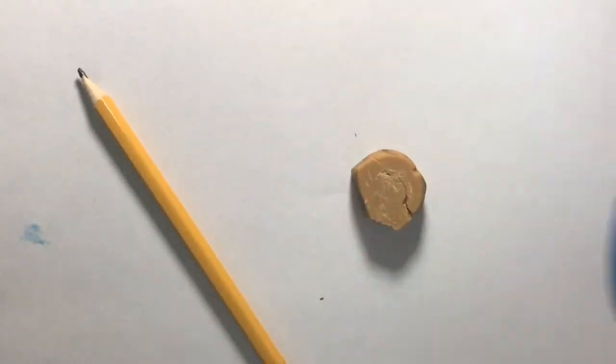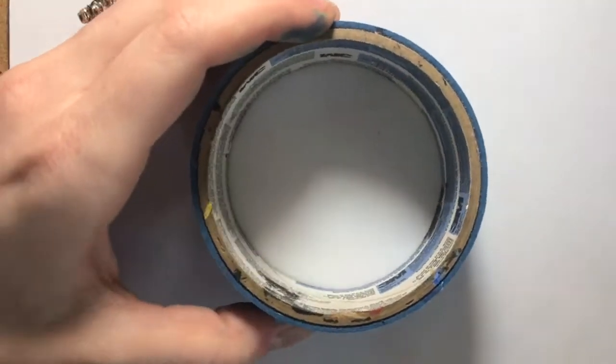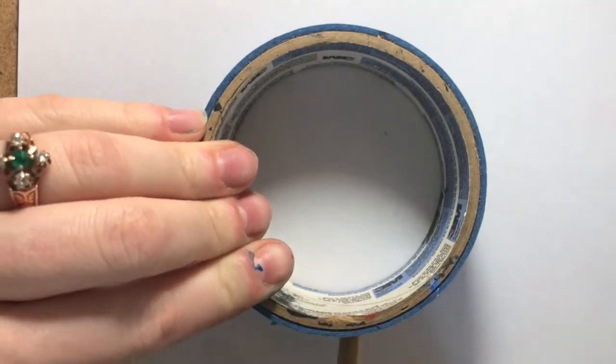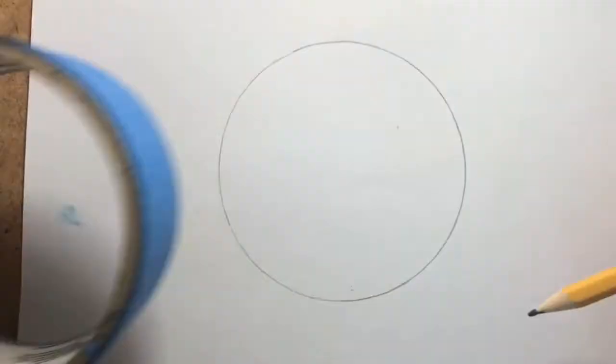All you will need for this project is a pencil, an eraser, a piece of paper, and something to trace a circle with. Once you have those supplies, you can carefully trace around your circle.